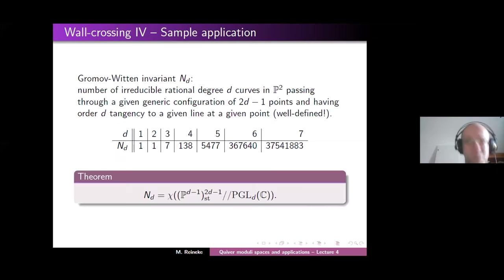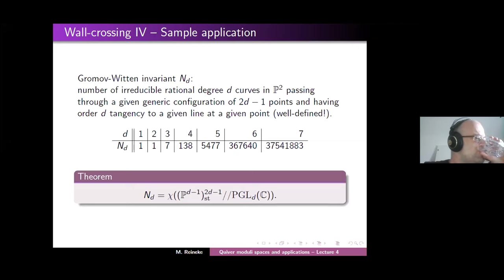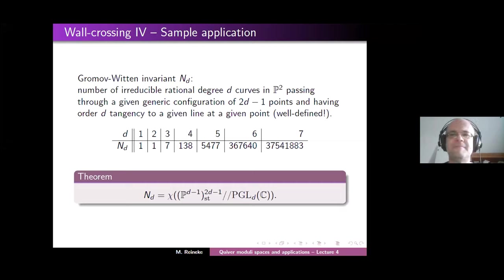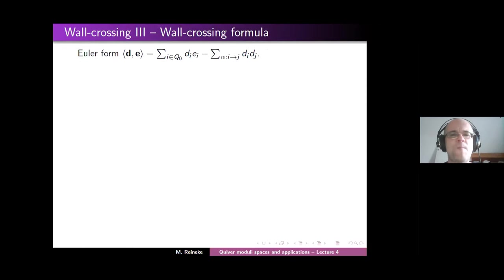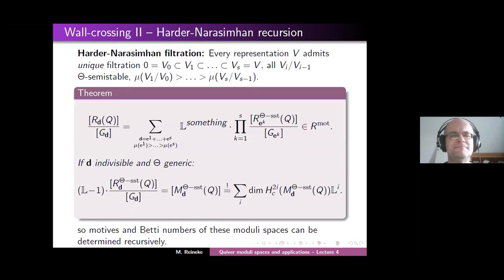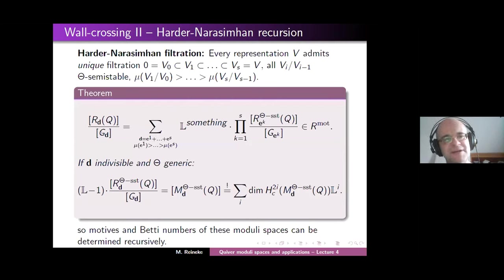Thank you very much, Marcus. There is one question by Monica Garcia: does the Harder-Narasimhan recursion formula translate to a formula for the stack of representations? Yes — I just wanted to avoid stacks. What this actually means is you take the quotient stack of the representation space by the group G_D and take the motive of the stack. And on the right-hand side, the same. So this quotient of motives is actually the motive of the quotient stack.